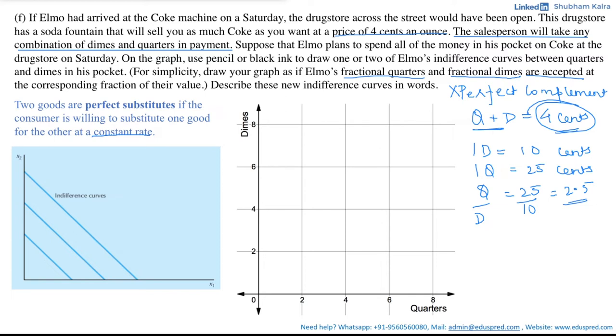So, the general procedure for drawing the indifference curve is suppose we are at a point of 2,3 where we have two quarters and three dimes with us. Graphically, that will lie here. Now, what if Elmo wants to have one more quarter? In that case, he would have a total of three quarters with him but notice that in order to get Elmo back to the original indifference curve or the original level of satisfaction, think of how much we need to reduce the dimes with him.